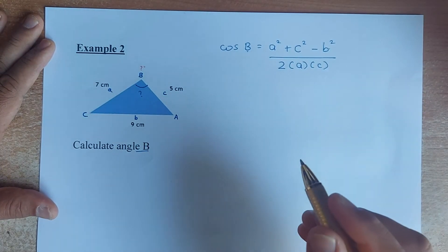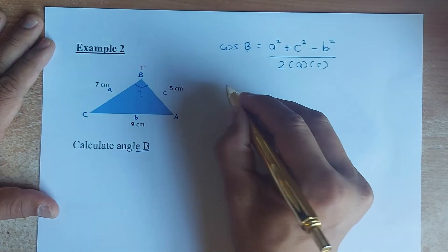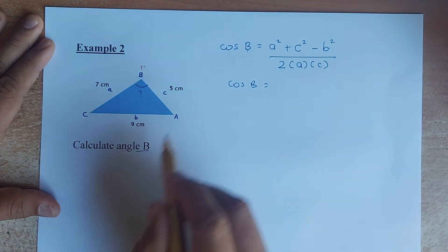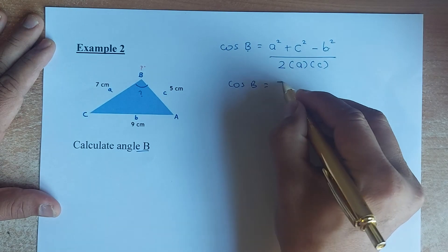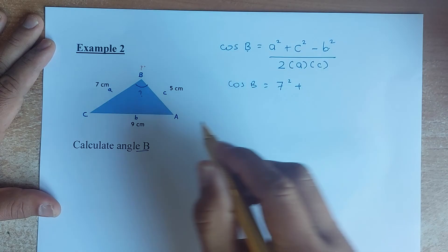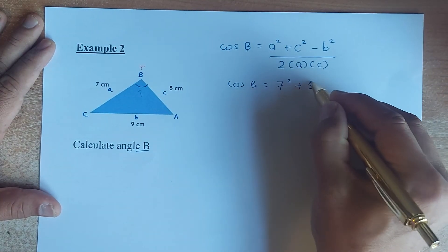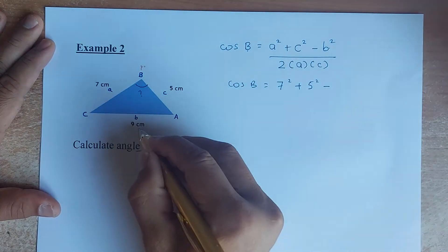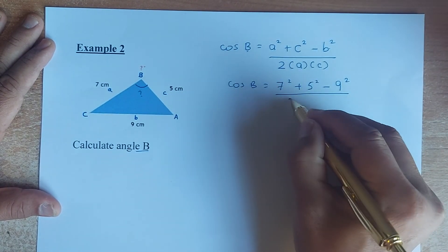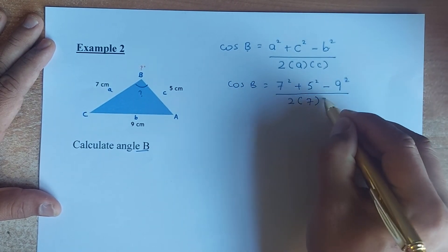So now we are going to substitute. So cosine B still remains. It's going to be A squared. Your A squared is now 7 squared because A is the opposite of angle A. Your C squared is now 5 squared. And you minus 9 squared. That's your B squared. And then you multiply 2 by 7 by 5.